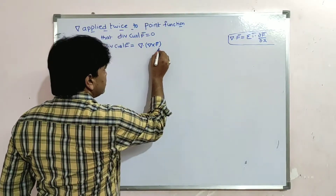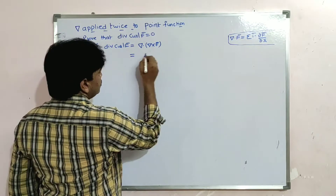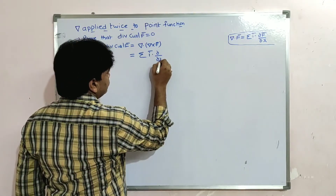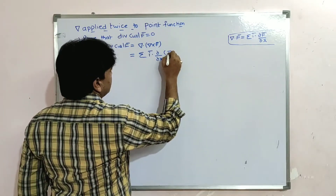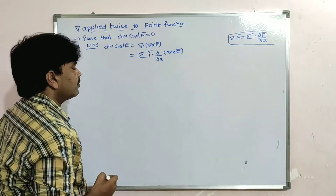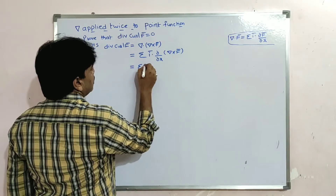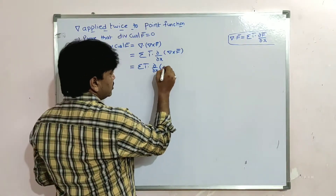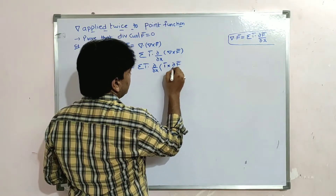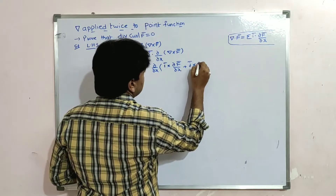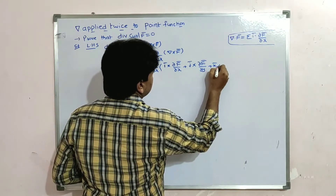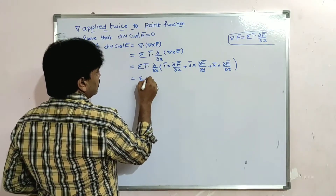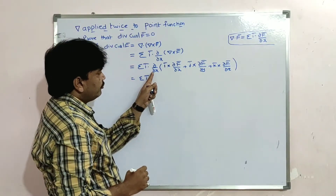In place of F̄ we have del cross F̄. So that is equal to sigma i̅ dot (∂/∂x) of (del cross F̄). We know del cross F̄ equals sigma: i̅ cross (∂F̄/∂x) + j̅ cross (∂F̄/∂y) + k̅ cross (∂F̄/∂z).